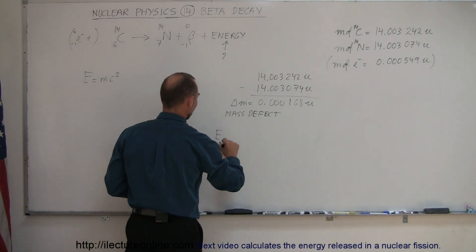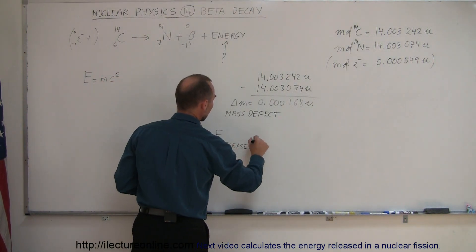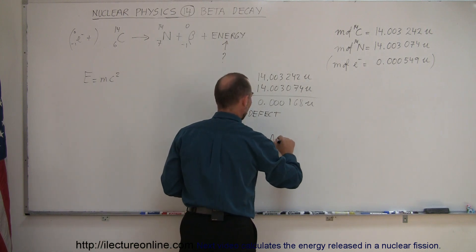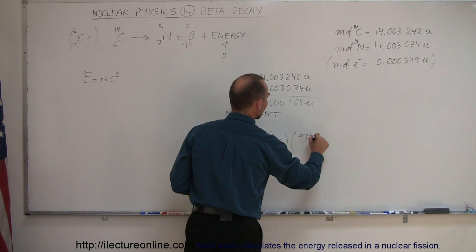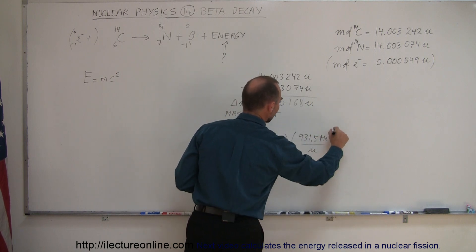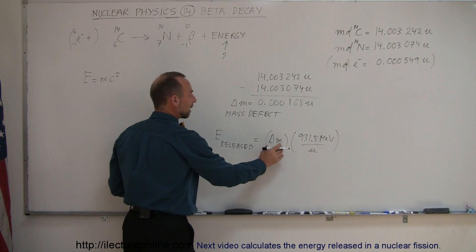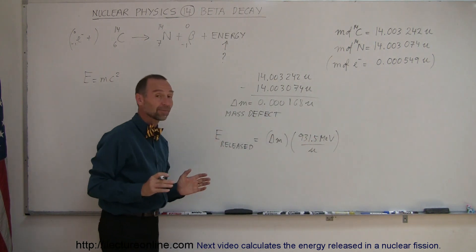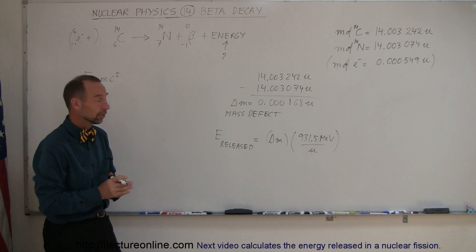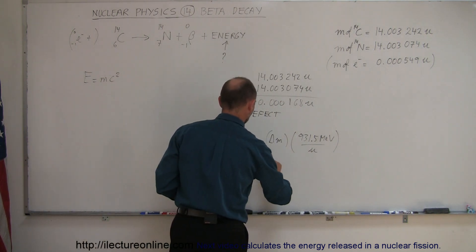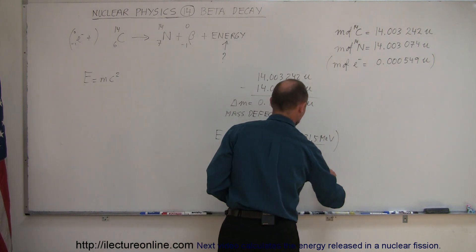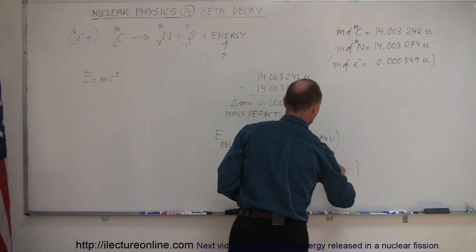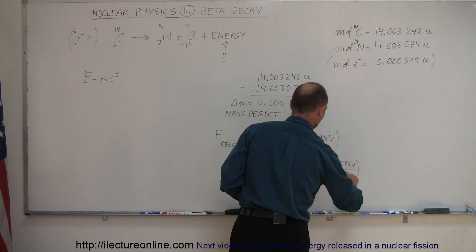We know that the energy released can simply be calculated by taking the mass that's lost, the delta m, and converting it to the equivalent 931.5 MeV per atomic mass unit. So if we take the amount of mass lost in atomic mass units and multiply times that, we get the energy equivalent of that mass. That is equal to 0.000168 atomic mass units times 931.5 MeV divided by one atomic mass unit.